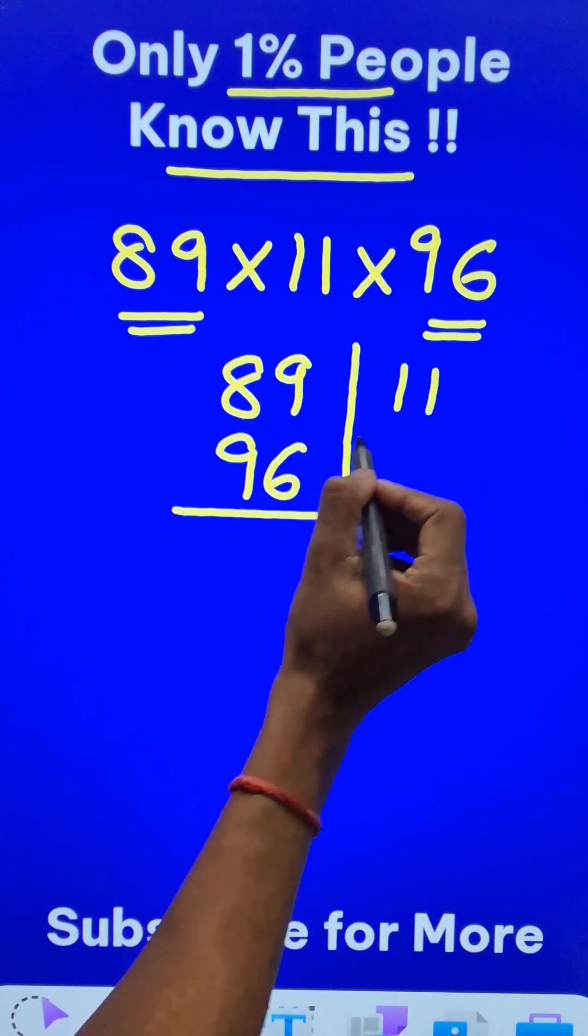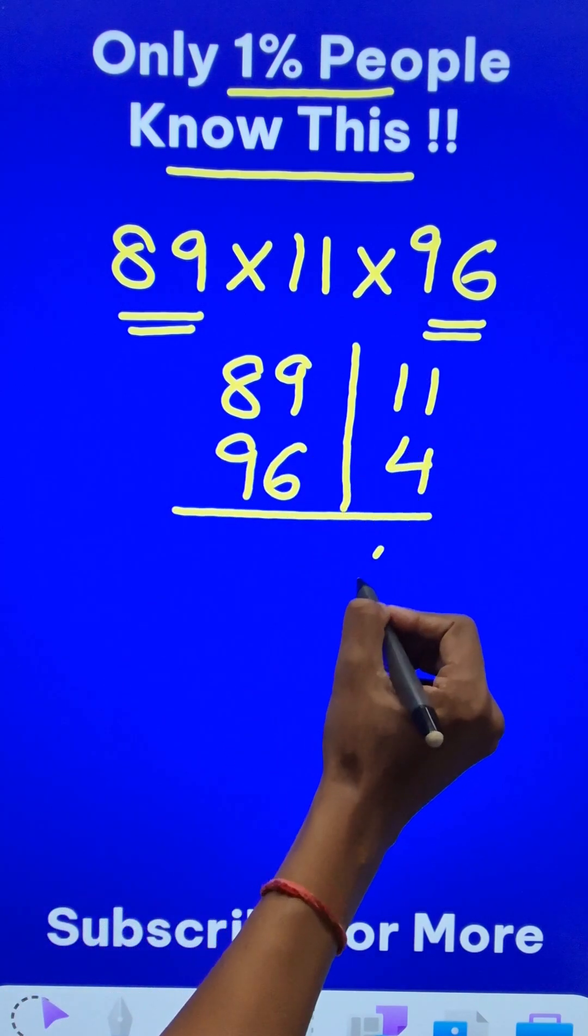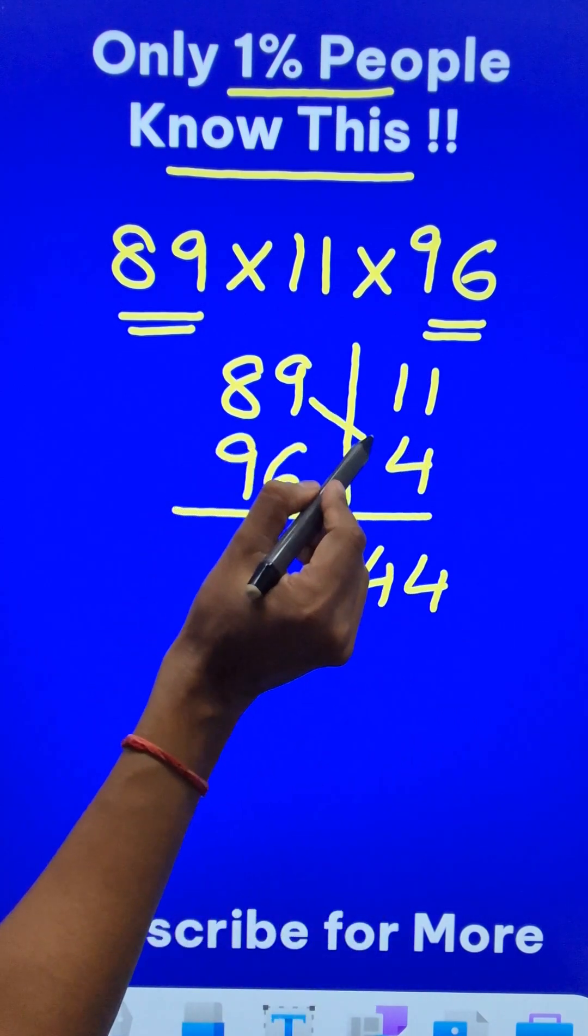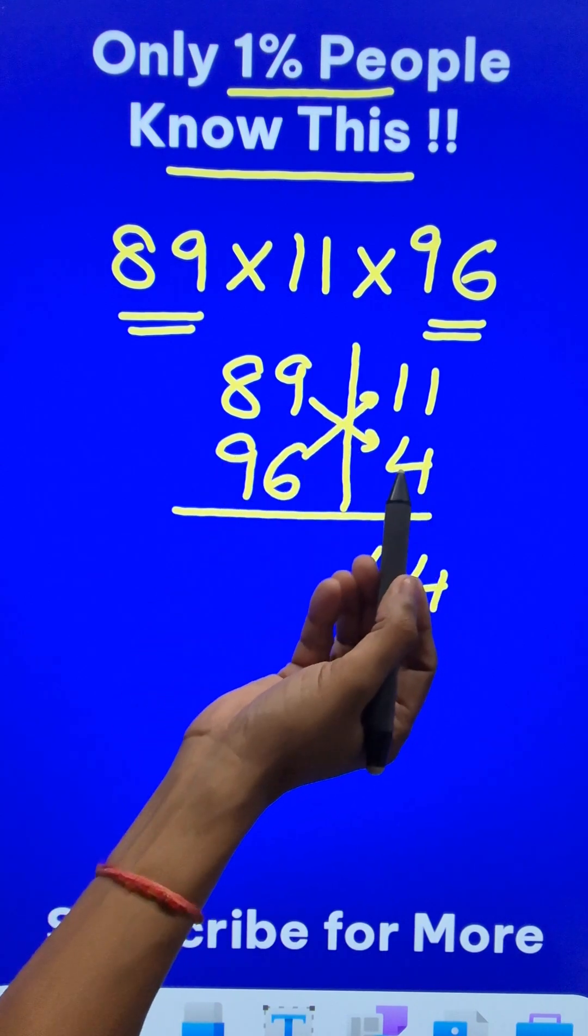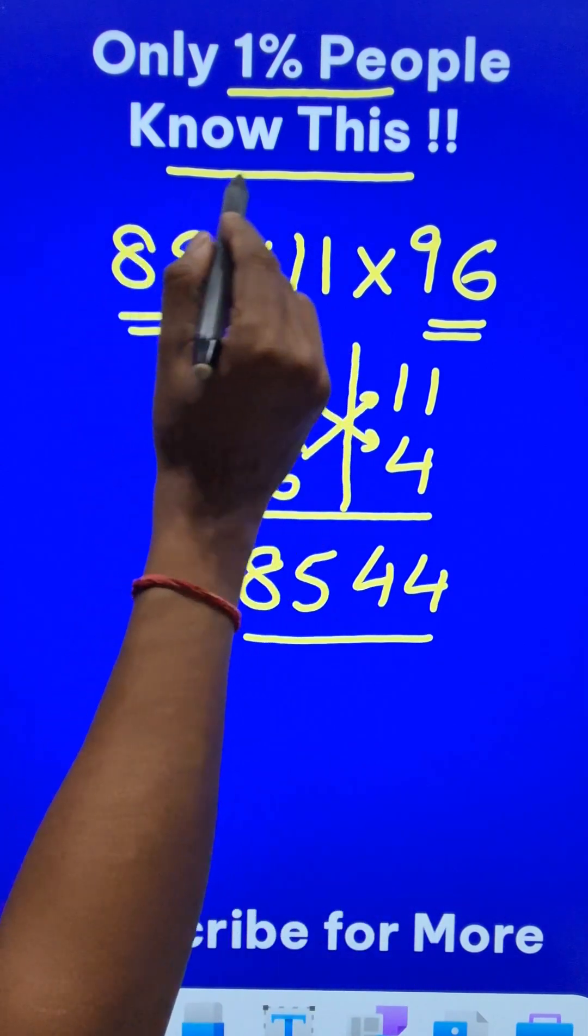100 minus 89 is 11 and 100 minus 96 is 4. When you multiply these two, you get 44 and subtract like this or like this, you will get the same answer. It is 85. Now this is the product of 89 and 96.